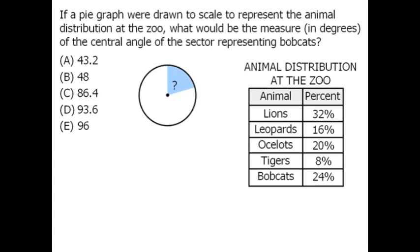Now the table tells us that 24% of all of the animals are bobcats. So if our pie graph is drawn to scale, then the shaded region shown here should be 24% of the area of the entire circle.